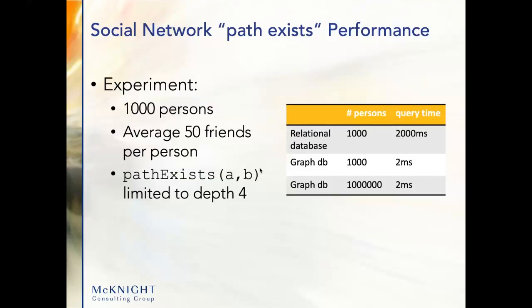In a relational database, that takes up to around 2,000 milliseconds. In a graph database, two milliseconds. And here's the kicker — even if the number of persons were raised a thousand-fold, the performance doesn't change. It's still a couple of milliseconds. That's one of the ways it scales: performance stays constant no matter how many nodes you get in the network.